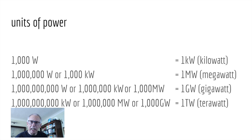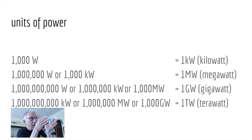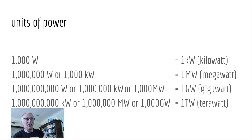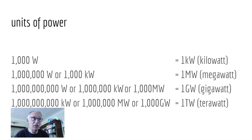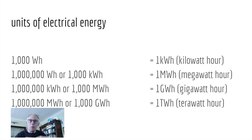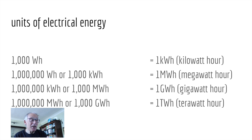We need to look at the units of power. We've already talked about the watt, and how a thousand watts is one kilowatt. A thousand kilowatts is one megawatt. A thousand megawatts is one gigawatt. And when we have something rated at that level running for one hour, we have a kilowatt-hour, a megawatt-hour, a gigawatt-hour, and a terawatt-hour.